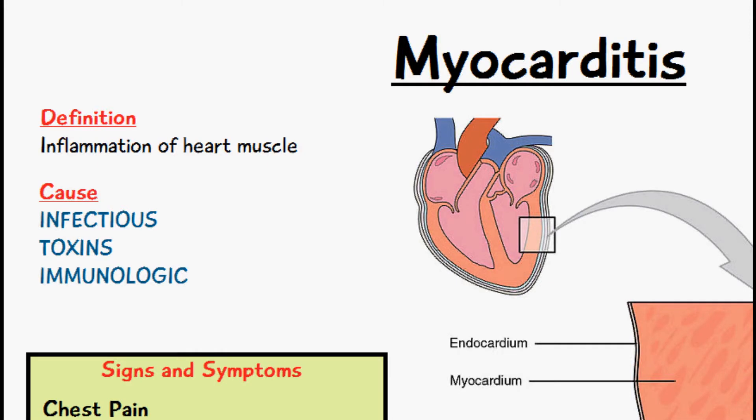We've just mentioned all the infectious causes of myocarditis, but myocarditis can also be non-infectious. This could be from intake of certain toxins like drugs or alcohol, or it could be due to certain chemotherapy agents. It could also be immunologic, such as after a heart transplant where the body rejects the new graft. Or it could be due to autoantigens, where the body attacks its own cells, resulting in myocarditis.